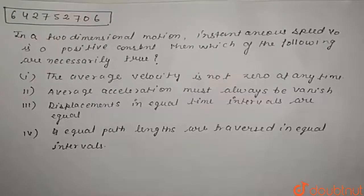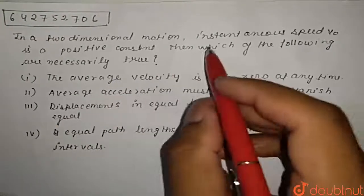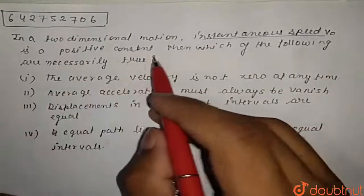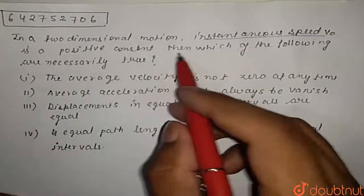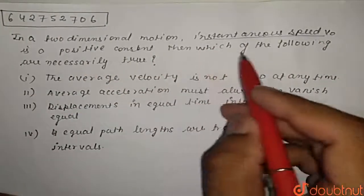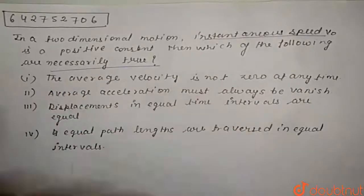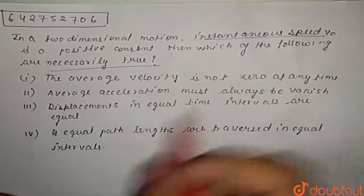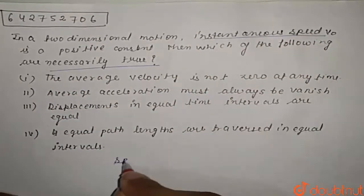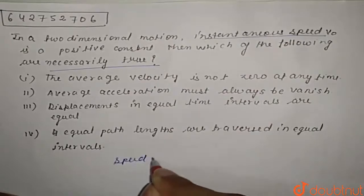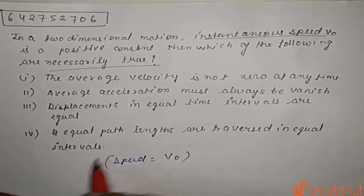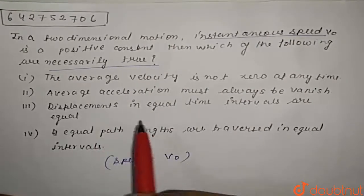Welcome to Doubtnut. We have a question: In a two-dimensional motion, instantaneous speed V0 is a positive constant. Then which of the following are necessarily true? So instantaneous speed is given as V0 and we have to verify all four options.